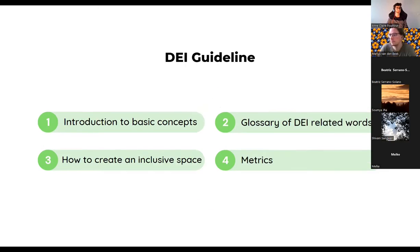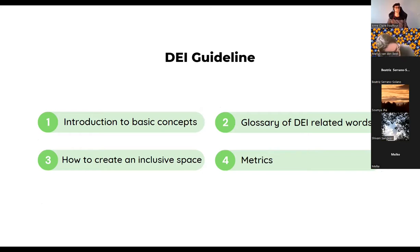The other guideline is the DEI guideline — a mini guideline to introduce the topic to the community. It will cover an introduction to basic concepts such as what DEI is, a glossary of related words including what 'ally' means and what inclusive language to use, how to create an inclusive space in open source, and metrics that will help us measure DEI.